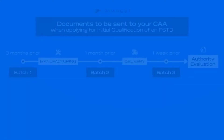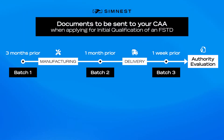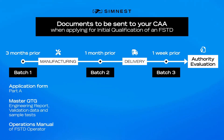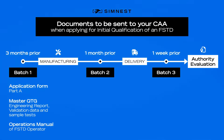Let's take a look at the certification process. We initiate the authorization process by providing you the first preliminary copy of the master QTG of the device. It contains the full engineering report and some sample tests, so that your CAA can see the structure of the document and the technical details of the FSTD. Should they require any change, we still have enough time to do it.